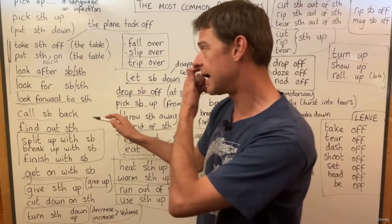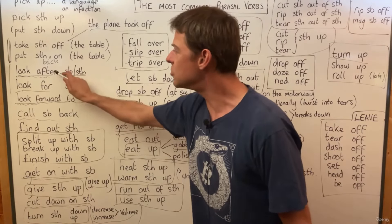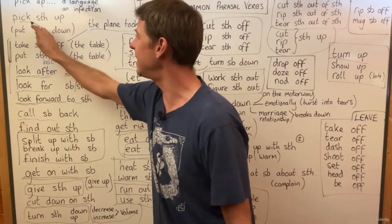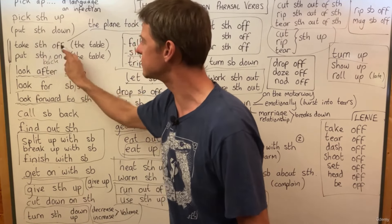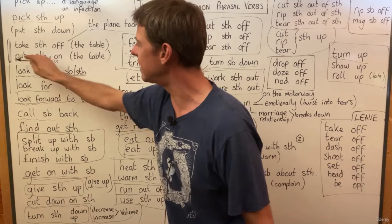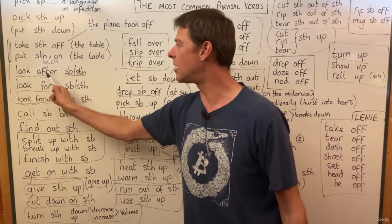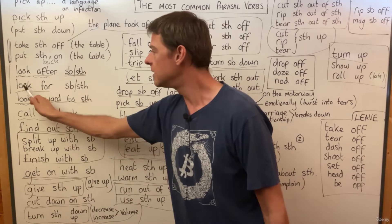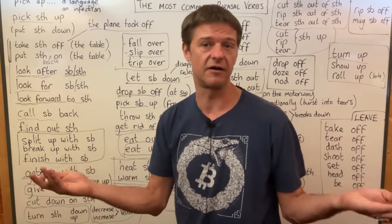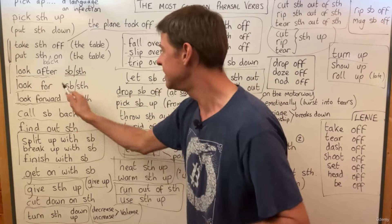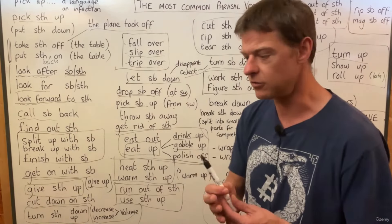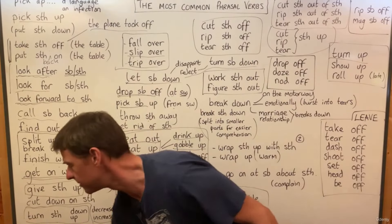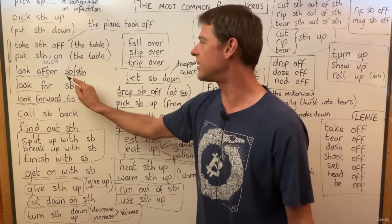Notice that 'look after' and 'look for' are not separable. We covered separable and inseparable phrasal verbs last class. Pick it up, put it down, take it off, put it on — those four are all separable. But these are inseparable: 'look after her', not 'look her after'; 'look for them' — my keys, I can't find them, can you help me look for them? You will always know if a phrasal verb is separable or inseparable by where I put 'somebody' or 'something' in this book.